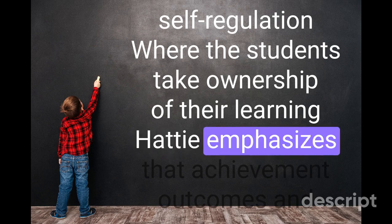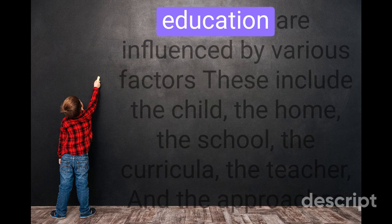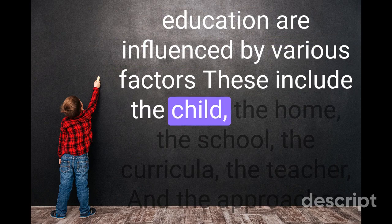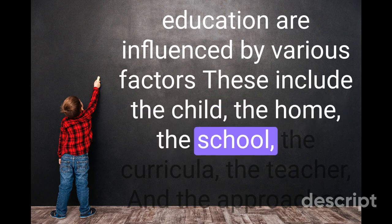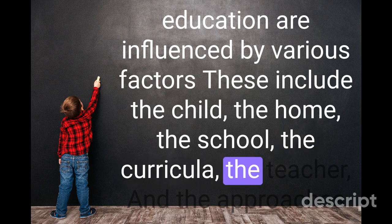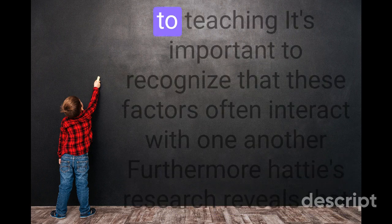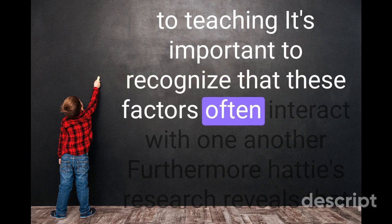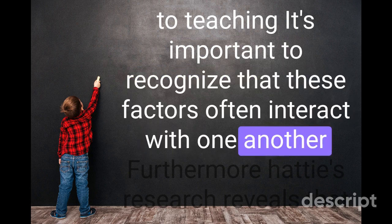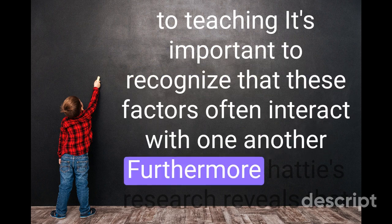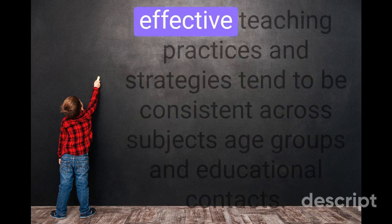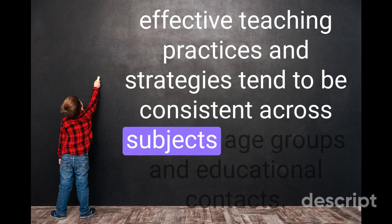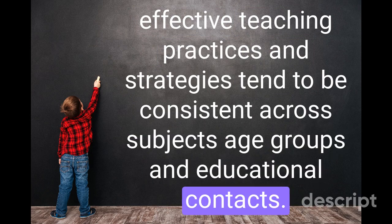Hattie emphasizes that achievement outcomes in education are influenced by various factors: the child, the home, the school, the curricula, the teacher, and the approaches to teaching. It's important to recognize that these factors often interact with one another. Furthermore, Hattie's research reveals that effective teaching practices tend to be consistent across subjects, age groups, and educational contexts.